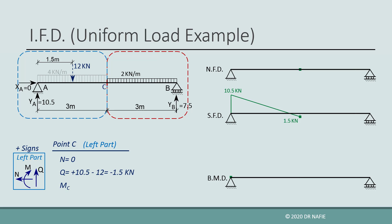The value of the moment will be calculated by taking the moment of all the forces in the left part about point C. The left part contains two forces: YA multiplied by an arm of 3 meters rotating in the positive direction, and the 12 kilonewton equivalent force multiplied by an arm of 1.5 meters rotating in the negative direction. The resulting moment about C will be positive 13.5 kilonewton meters. The calculated value is drawn on the diagram at point C. However, we cannot connect this value to the value at point A using a straight line, because the existence of the uniform load causes the diagram between points A and C to be a parabola.